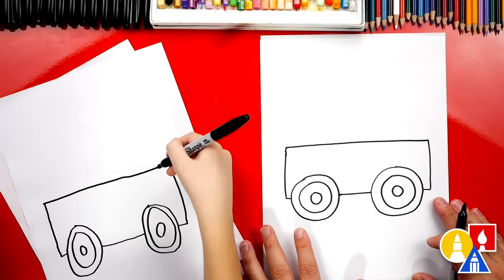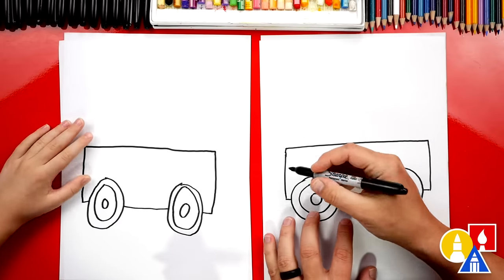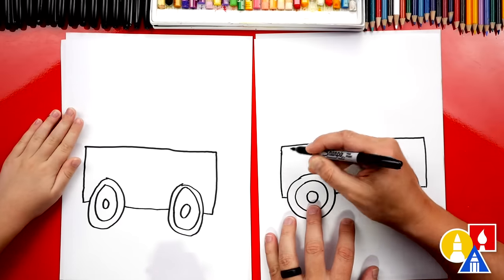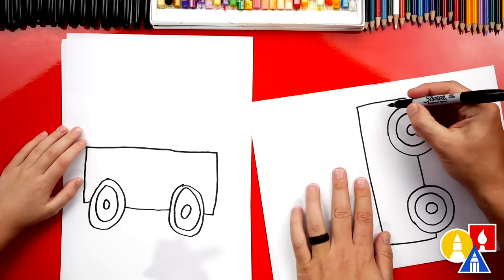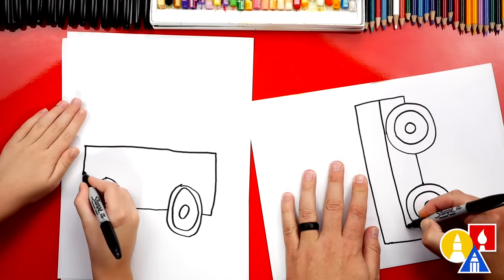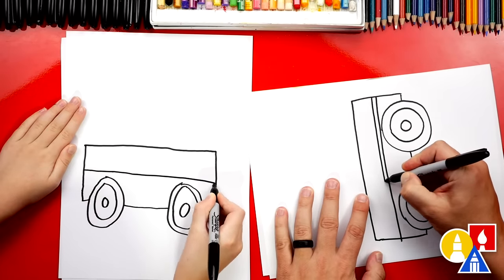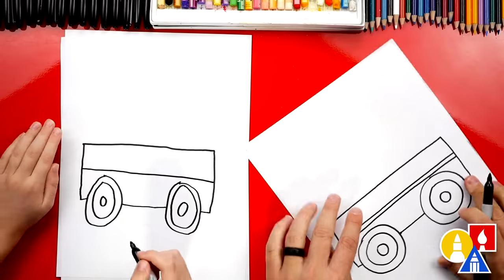Okay, now let's add more details to our wagon. We're gonna add another line, two lines. I'm gonna turn my paper again. Sometimes I think it's easier when you turn your paper, especially when you're drawing long straight lines. I'm gonna draw one and then another one right next to it.